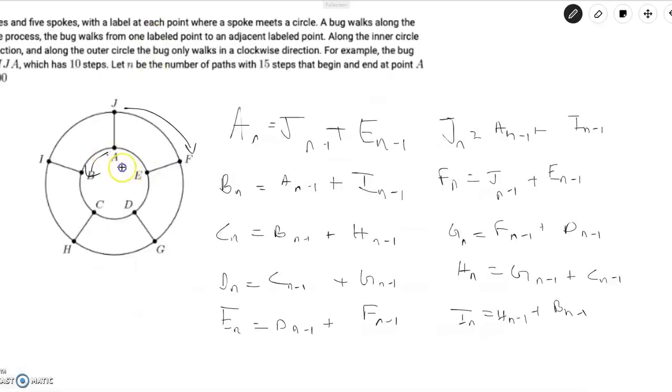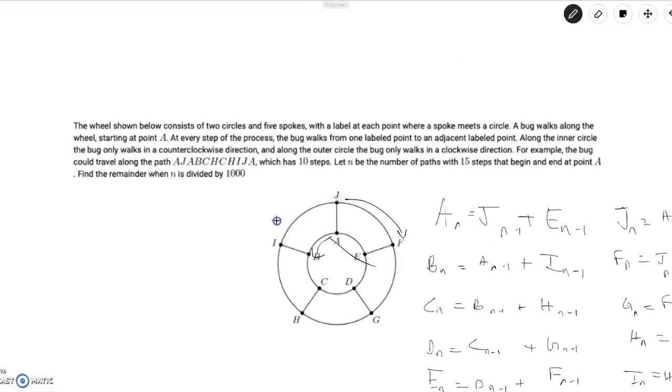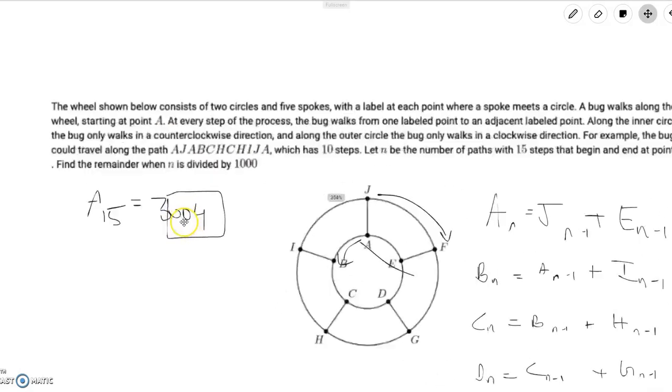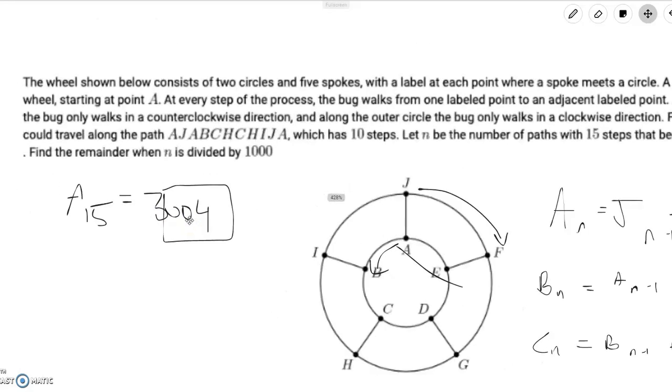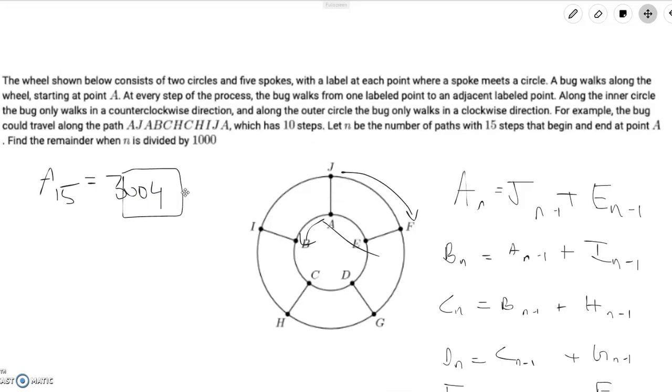So once you've completed your table, you can just go back to the problem. We see that A of 15 is equal to 3,004. We want to find the remainder when n is divided by 1,000, and that's just equal to 004. Thank you for watching. If you enjoyed this video, please send it to your friends or family. And if you enjoyed this video, please like and subscribe.